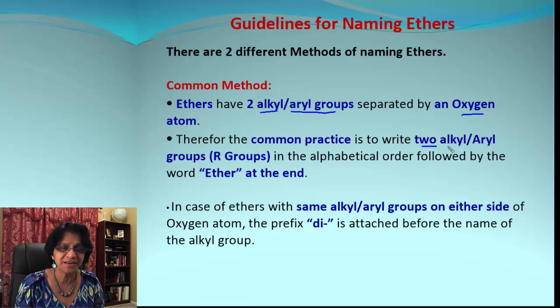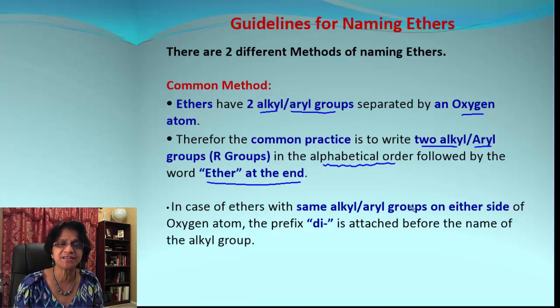So the common practice is we list those two alkyl or aryl groups in their alphabetical order, and then we just write the name 'ether' at the end. In case if we have two groups which are exactly same, maybe we have both sides ethyl group or methyl group, we use the prefix 'di-', so it will be dimethyl, diethyl ether, and so on.